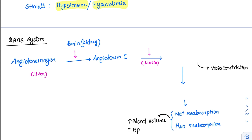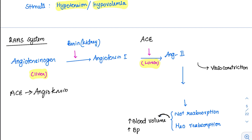From angiotensin 1, it has to be converted to a much more active form called angiotensin 2. This conversion happens in the lung, with the help of an enzyme called ACE — angiotensin converting enzyme. So angiotensinogen comes from the liver, renin from the kidney, and ACE from the lung.